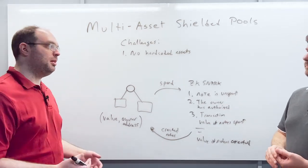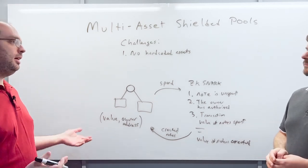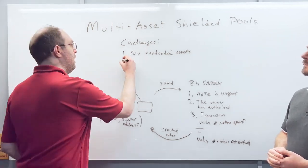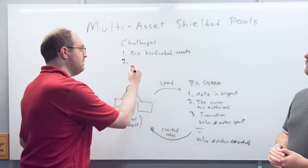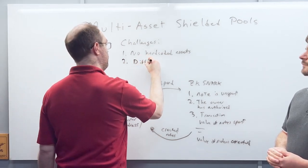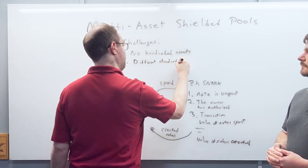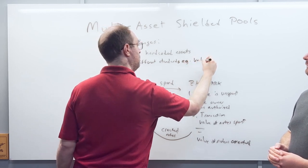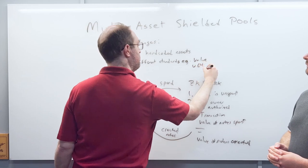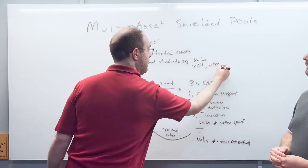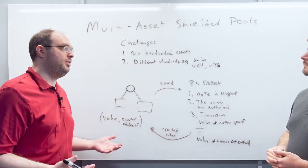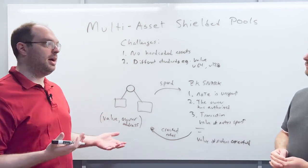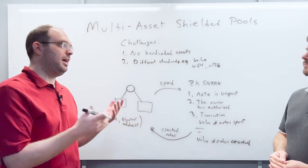There should be some standardized way to create new assets and put them in or take them out of the shielded pool. The second challenge is that different asset standards look technically different — for example, a value field might sometimes be a U64 and sometimes a U128. When putting assets following different standards into the same shielded pool, you have to address how they look different.